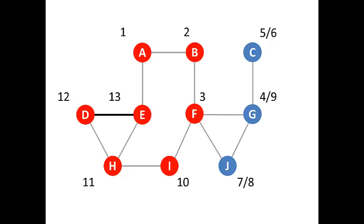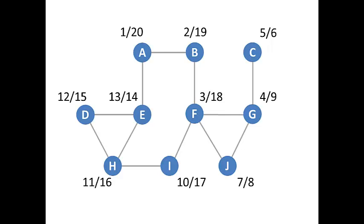E is a dead end because every vertex connected to E has already been discovered. So we give E a finish time of 14 and paint E blue, then backtrack to D. We give D a finish time of 15 and paint D blue, then backtrack to H, which gets a finish time of 16. When we backtrack to I, it gets a finish time of 17. F gets a finish time of 18. Then we backtrack all the way to the source, vertex A. Every vertex is now painted blue, meaning they've all been finished — they all have a start and a finish time. We're finished exploring the depth-first search for this graph. There are 10 vertices in the graph and we've counted up to 20, meaning each vertex has two times — a discovery and a finish — for a total of 20 numbers.